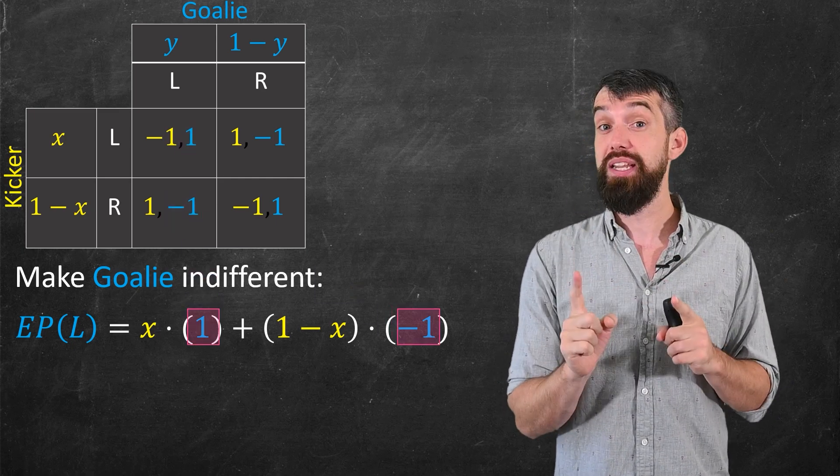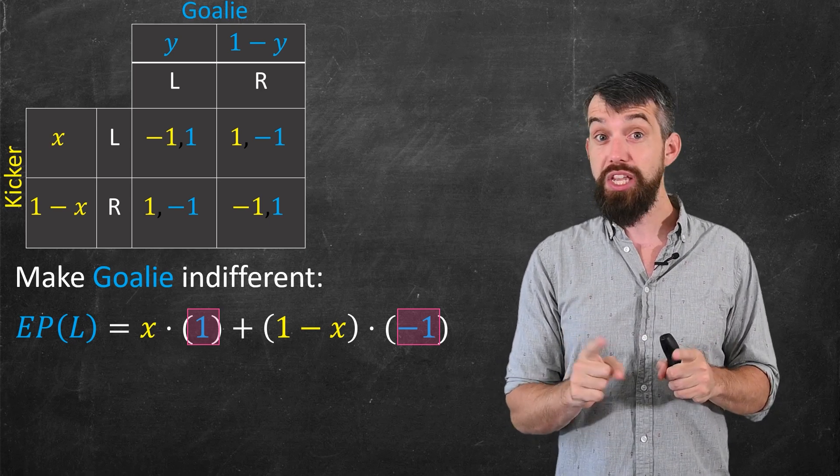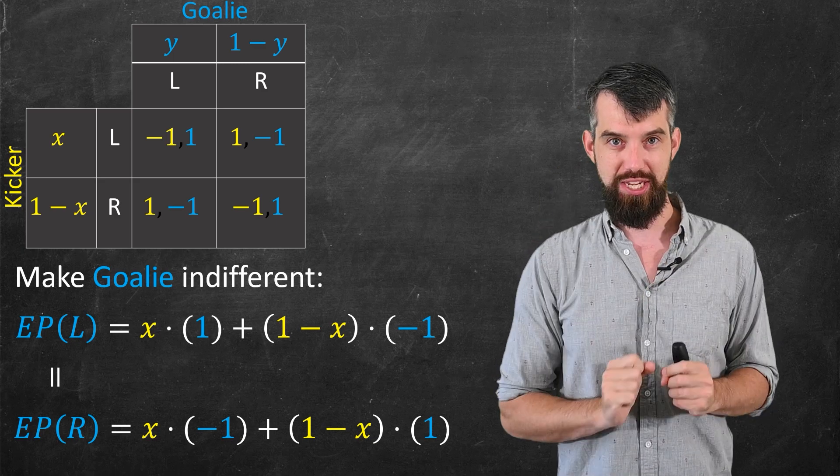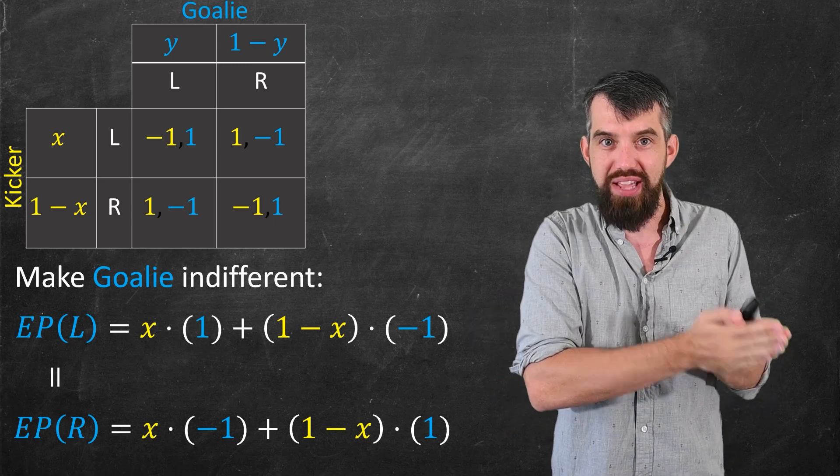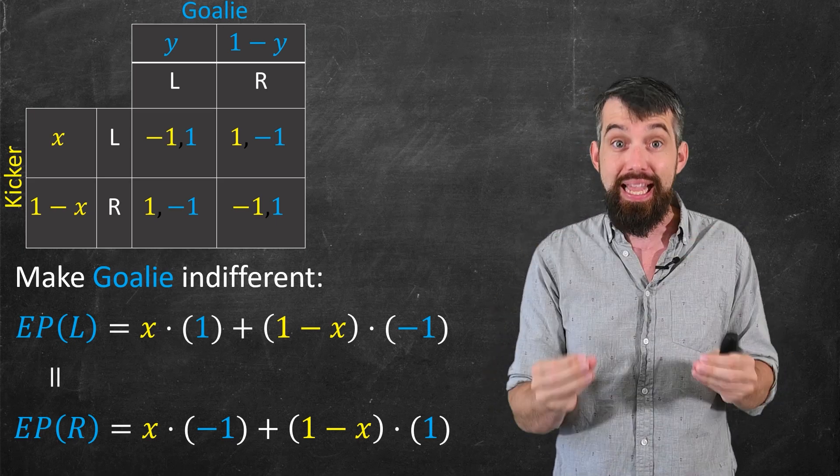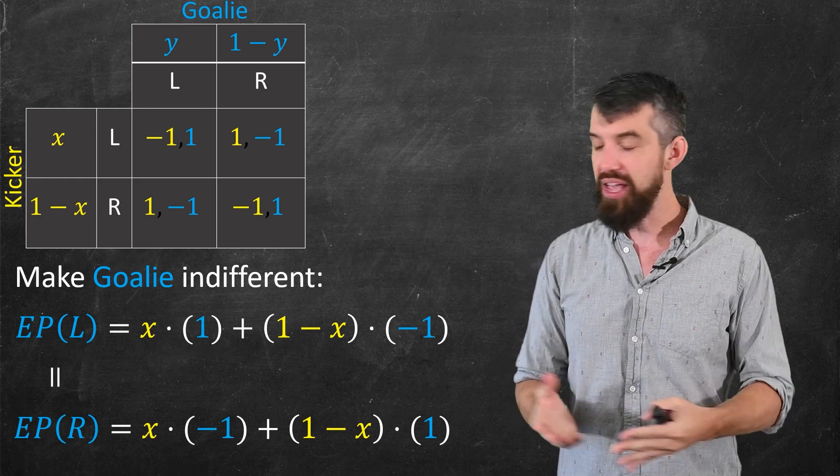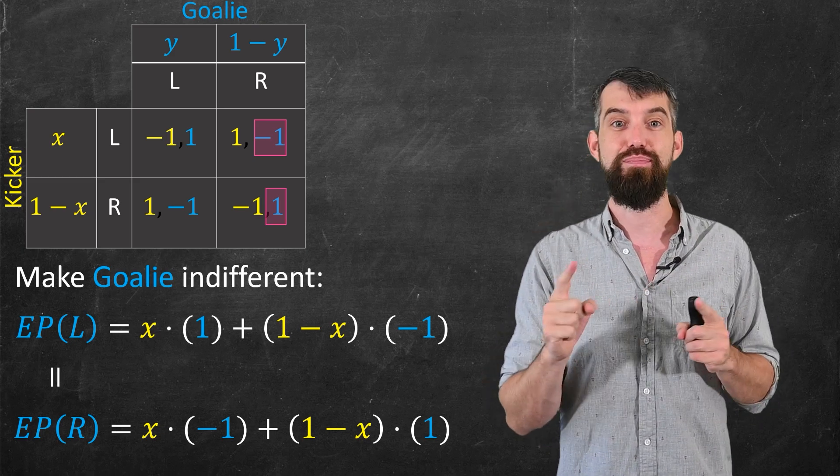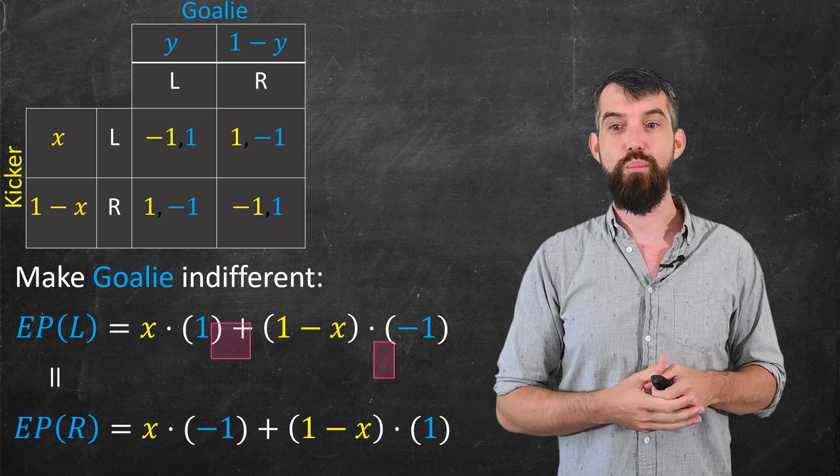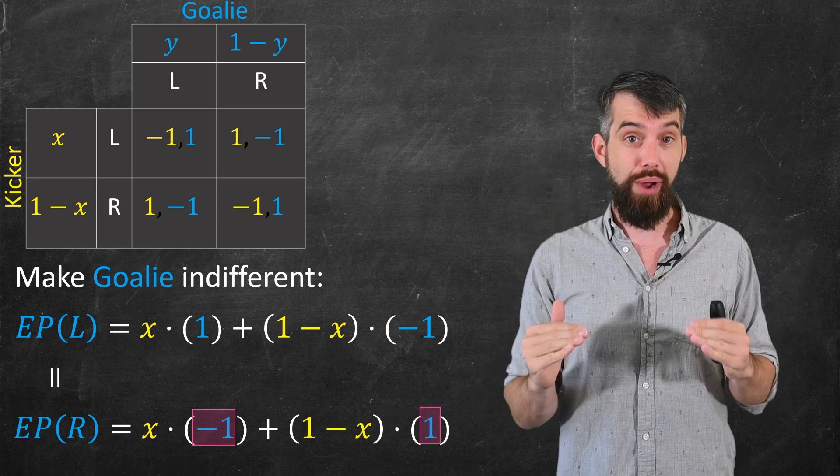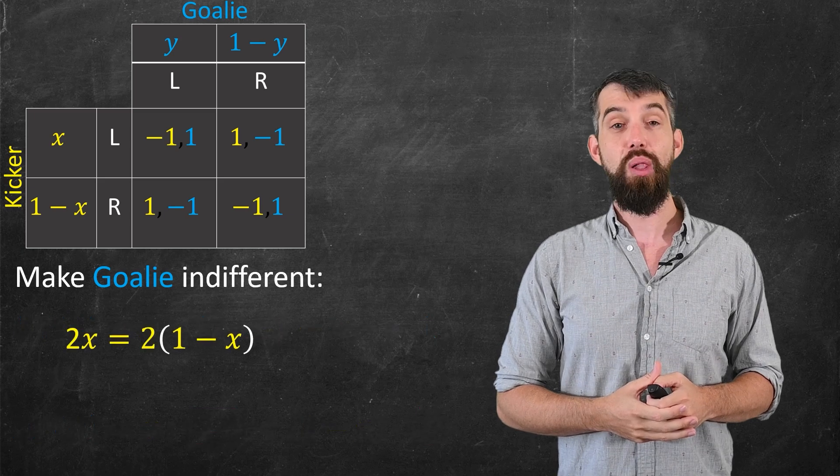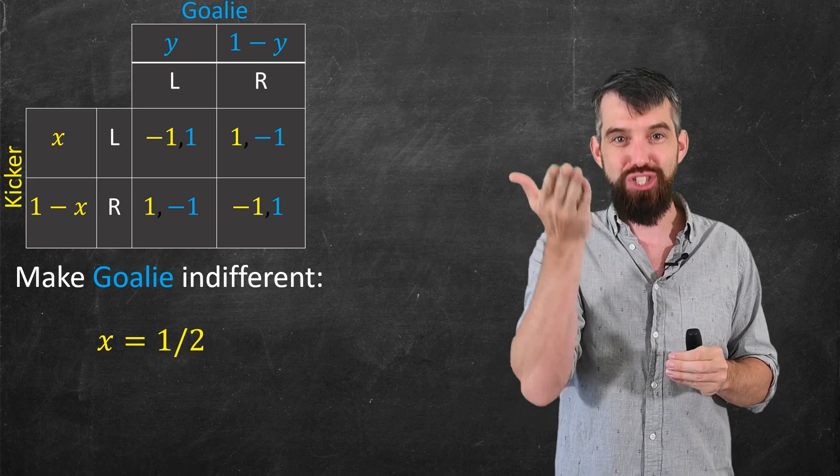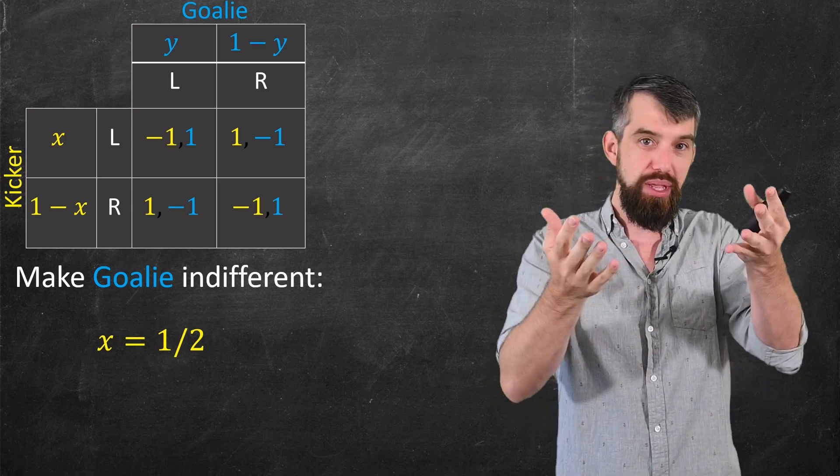Now here's the real key. This is the expected payoff for the goalie of going left. If the goalie is going to be indifferent, this better be exactly equal to the expected payoff if the goalie goes right. So in other words, we're saying it doesn't matter whether you go left or the right, the expected payoff in both of those two situations is exactly the same. That will impose a Nash equilibrium. I get the same kind of formula over here. The x and the 1 minus x are our probabilities, but our payoffs now come from the second column because the expected payoff when the goalie goes right. So I plug in the minus 1 and the 1, and so now I have these two different sides to an equation in the variable x I can solve for x. Specifically, I can clean this all up, and this is just 2x is 2 times 1 minus x, and then you can clean that up even further and get x is equal to 1 half, which we had already intuitively figured out that it was. The kicker should go left half the time, and here we just managed to prove it.